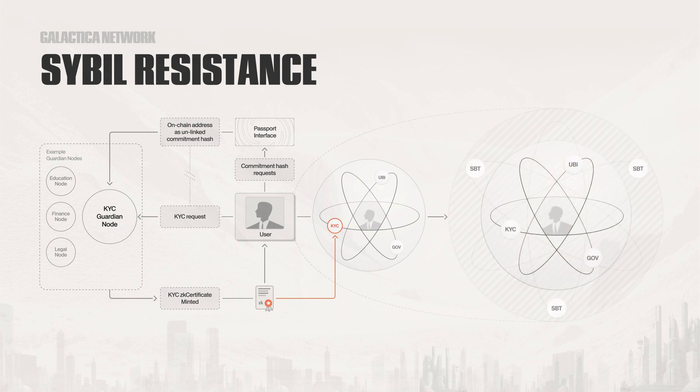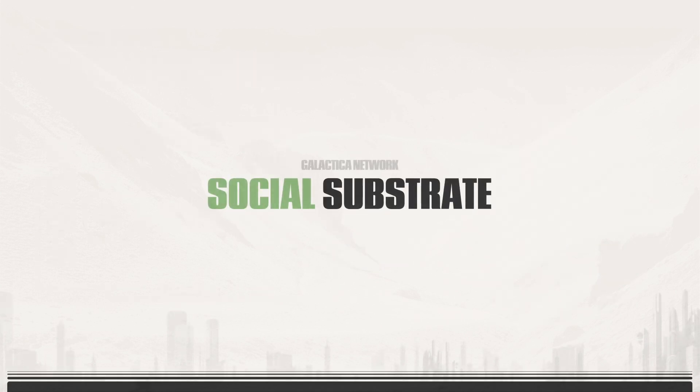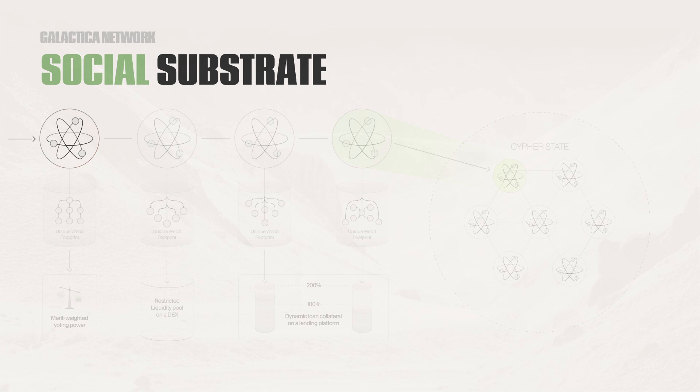Beyond this, persistent identities become naturally more complex over time as they further interact with the network. This constant increase in complexity ensures Galactica Network's Sybil resistance increases organically over time, further securing the network and providing a foundation from which many more unique features can be derived. With Sybil resistance in place and persistent identities present, we can now begin to talk about the second foundational property of Galactica Network — its social substrate. A persistent identity on Galactica Network is informed by its unique Web3 footprint, that is its long-term on-chain history. By utilizing both the reputation root contract and contingent transactions, users and dApps can use the Web3 footprint of persistent identities to inform reputation-based transactions.